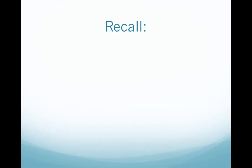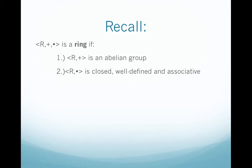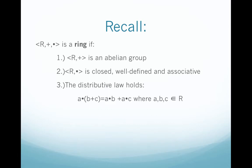First, a little bit of review. Remember that we say R is a ring if R is a set over addition and multiplication, and the set over addition is an abelian group, the set over multiplication is closed, well defined, and associative, and lastly the distributive law holds, meaning that multiplication distributes over addition.